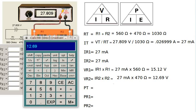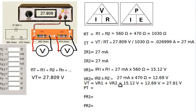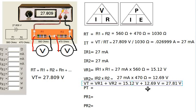Notice that if we add those two voltages together — 15.12 volts plus 12.69 volts — we get 27.81 volts, which matches the power supply voltage. This confirms the series circuit rule that the individual voltages add up to the total voltage.